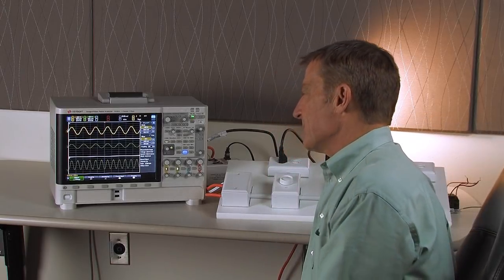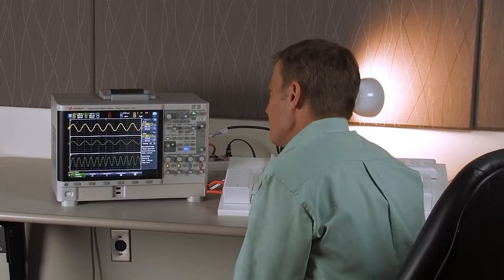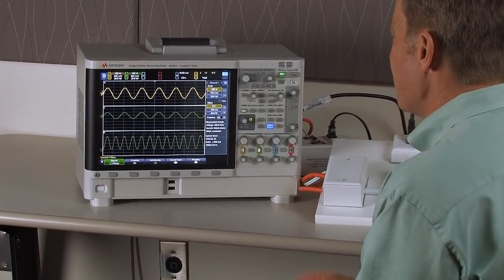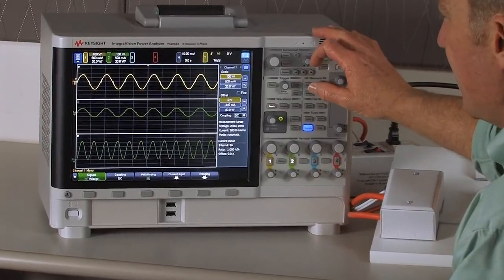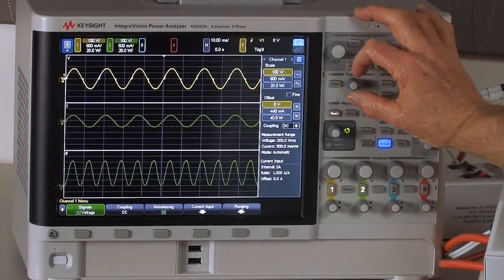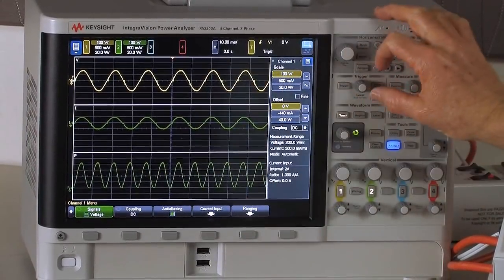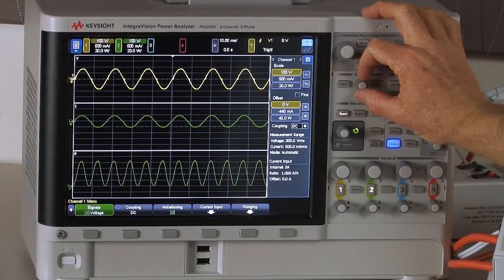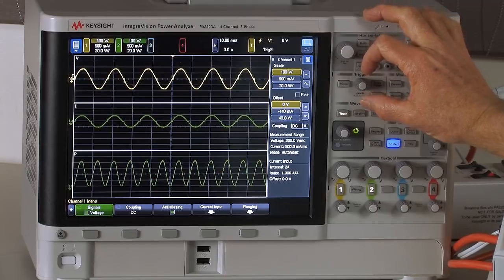So to get started, we'll look at how our dimmer switches work. Right now I have a typical dimmer switch hooked up and it's actually driving a 60 watt incandescent bulb. We have two waveforms here: the waveforms going into the dimmer switch and the waveforms coming out of the dimmer switch.